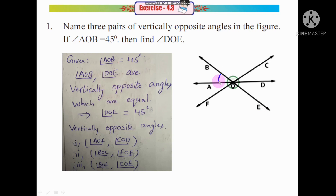Since angle AOB is 45 degrees and angle DOE is its vertically opposite angle, angle DOE will also be 45 degrees. Because vertically opposite angles are equal, both will be the same value — so angle DOE is 45 degrees.